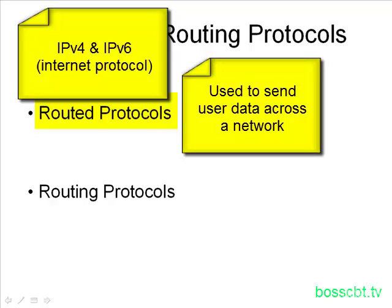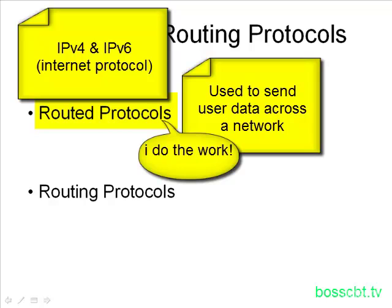The routing table is where the router stores all the information it knows — all of the IP addresses and routes that it is aware of. When a router receives an IP packet, there is an IP header, and inside that IP header is a bunch of information that the router uses to determine what it should do with that packet. It uses this IP routing table, and together it can do some work and send the packet on its way. So that's a routed protocol — they do the work.